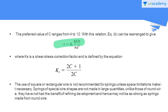The preferred value of C ranges from 4 to 12. This value depends on the geometry of the spring and is a dimensionless quantity. We have thus obtained the total shear stress developed in the spring wire when the helical spring is under the application of an axial load passing through the center of the cross-section of the helical spring.